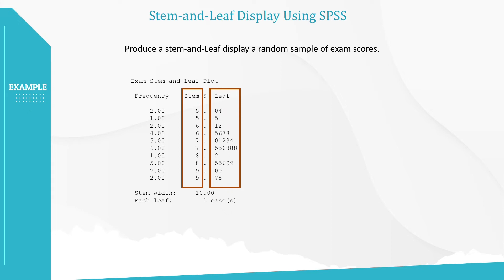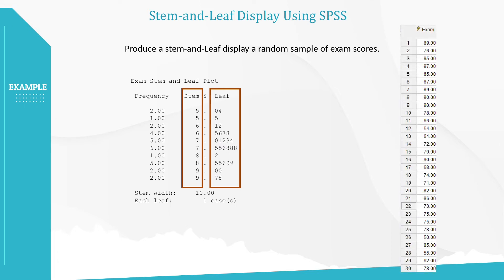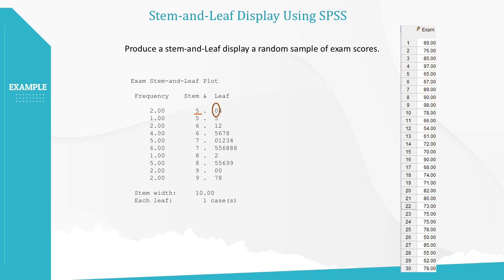In order to get the adequate number of digits, we need to take a look at the original dataset. Since exam scores are 89, 76, 85, and so on, the first digit in the stem column should be the 10th digit. So, the lowest exam score is 50, and the second lowest score is 54.